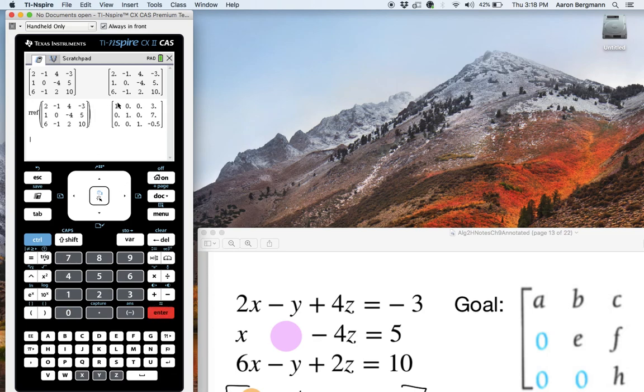And there it is. RREF, row reduced echelon form. A whole bunch of zeros. 1, 1, 1 along this main diagonal. And then 3, 7, negative 1 half, which is the answer.